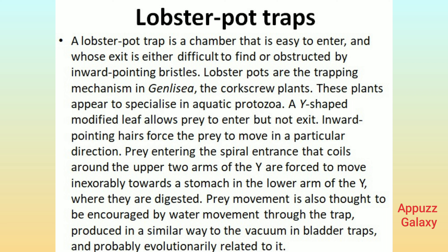A lobster pot trap is a chamber that is easy to enter, and whose exit is either difficult to find or obstructed by inward-pointing bristles. Lobster pots are the trapping mechanism in Genlisea, the corkscrew plants. These plants appear to specialize in aquatic protozoa. A Y-shaped modified leaf allows prey to enter but not exit. Inward-pointing hairs force the prey to move in a particular direction. Prey entering the spiral entrance that coils around the upper two arms of the Y are forced to move inexorably towards a stomach in the lower arm of the Y, where they are digested. Prey movement is also thought to be encouraged by water movement through the trap, produced in a similar way to the vacuum in bladder traps, and probably evolutionarily related to it.